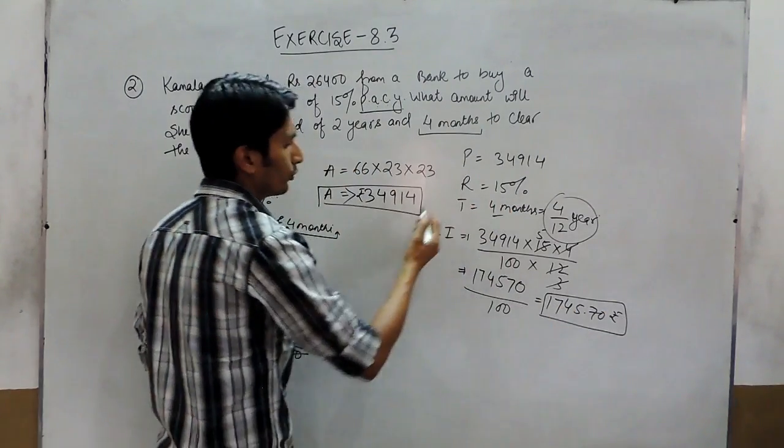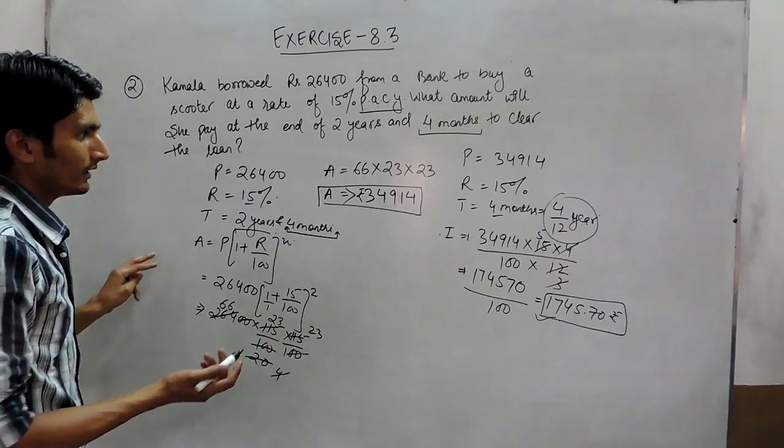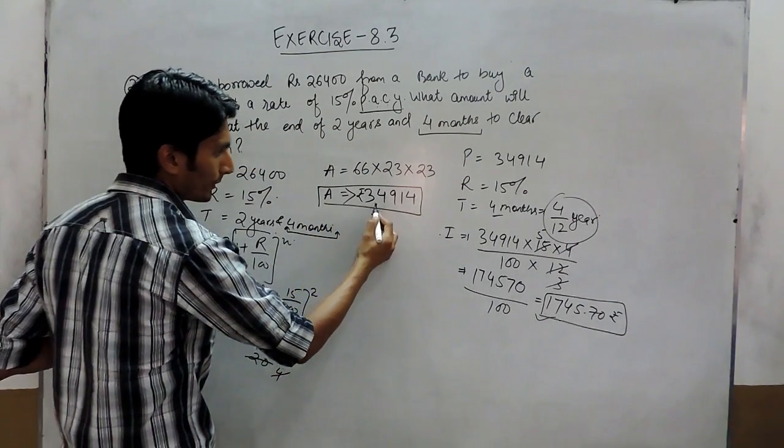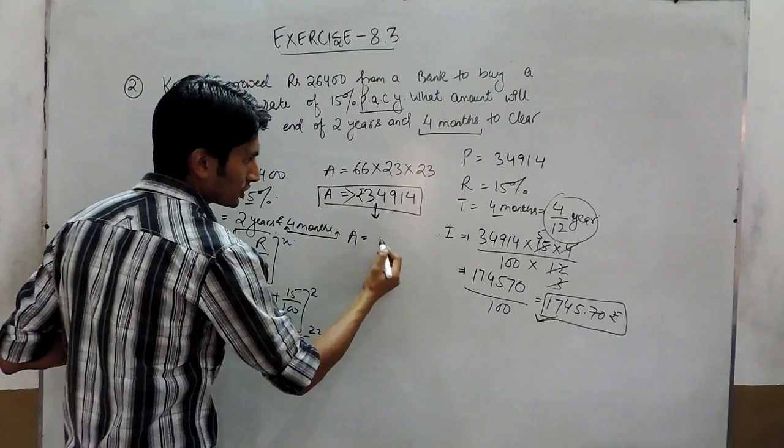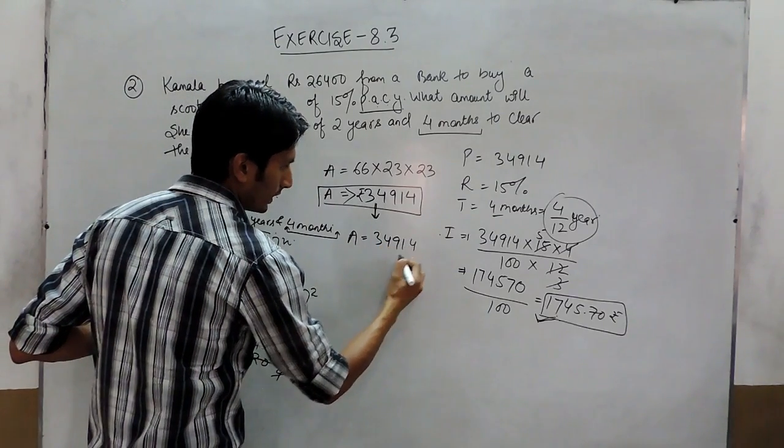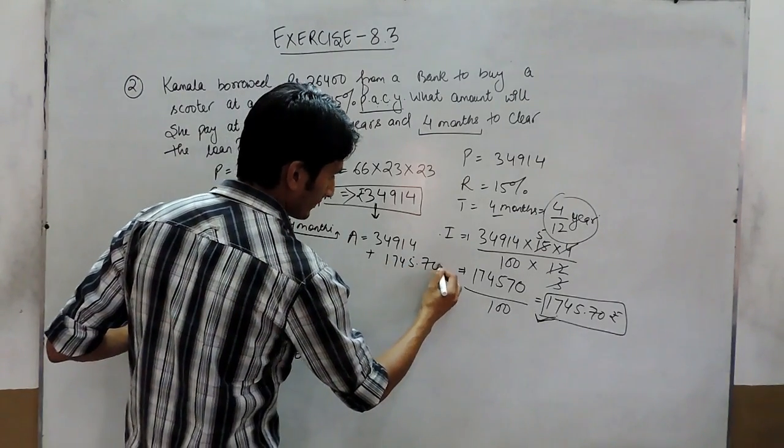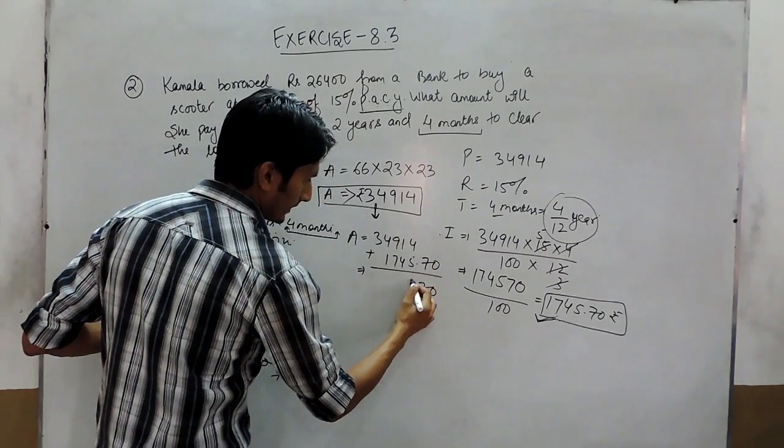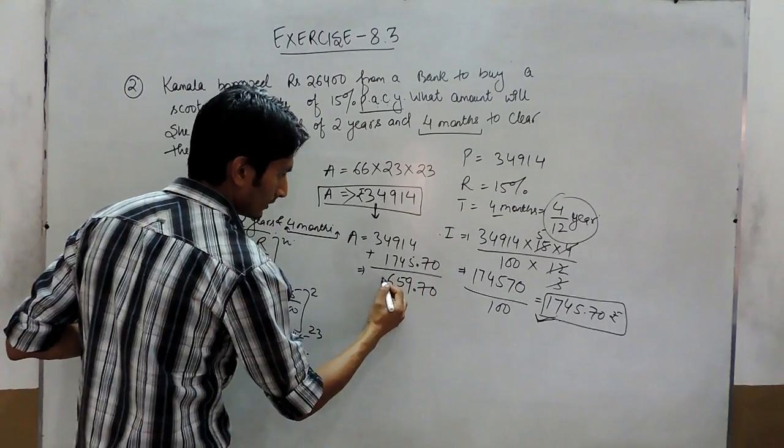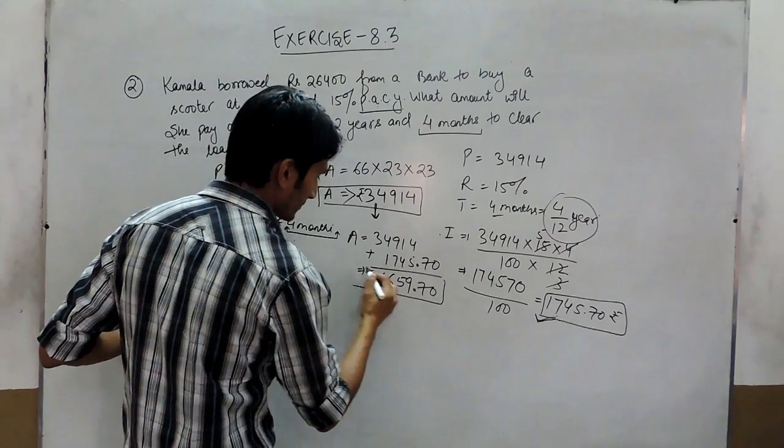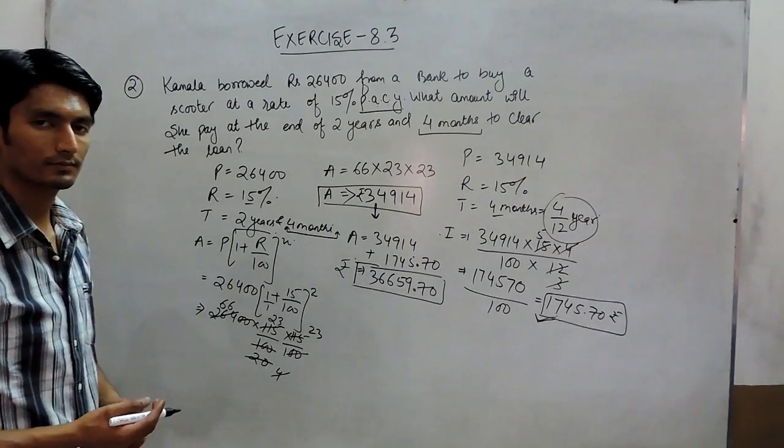So for the remaining period, Kamala has to pay this much interest. In the first 2 years, she had to pay 34,914, and for the 4-month period, she has to pay 1,747.70. The total amount is 34,914 plus 1,747.70, which gives 36,661.70. This is the total amount she has to pay to clear her dues. Thank you.